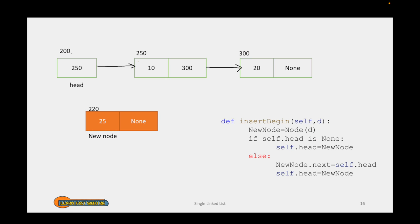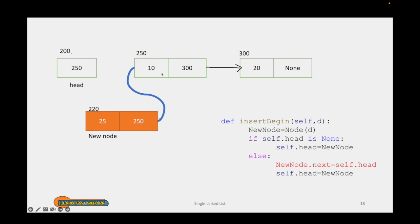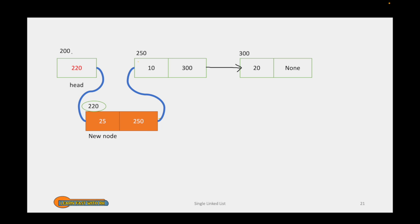Once we reach the else part, the first step is to copy whatever value head is holding into the new node's next. By this step we make sure that from the new node we can reach the first node. The next step is to store the address of the new node into head. When we store the address of the new node in head, it stores the value 220 in head, giving us a reference from head to the new node. That is how we fix the new node at the beginning.